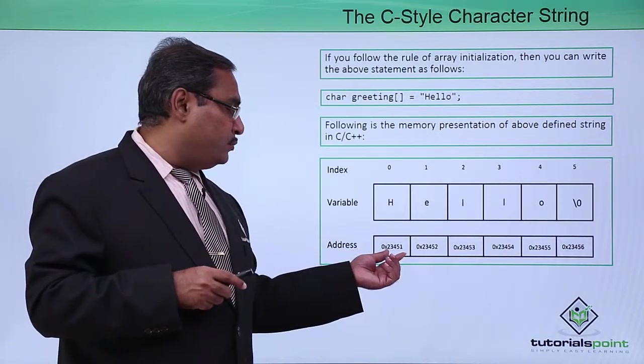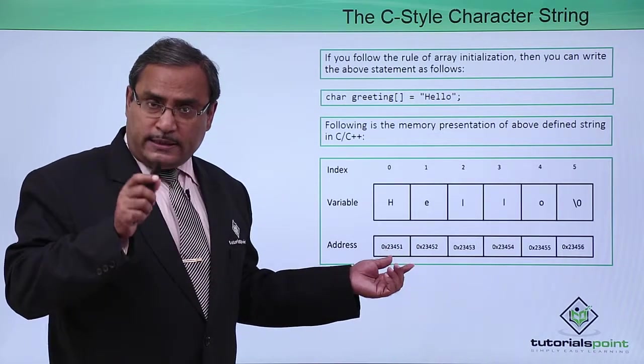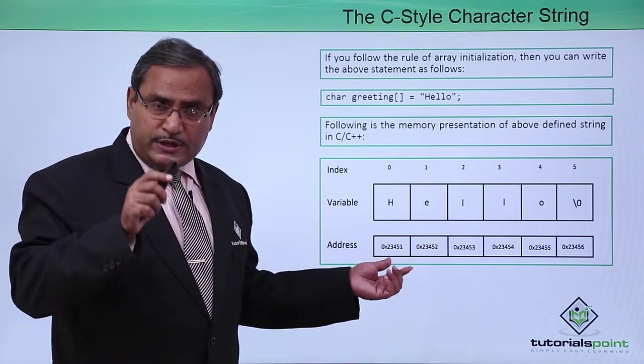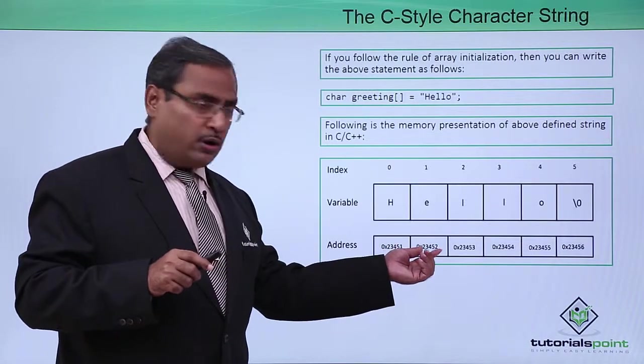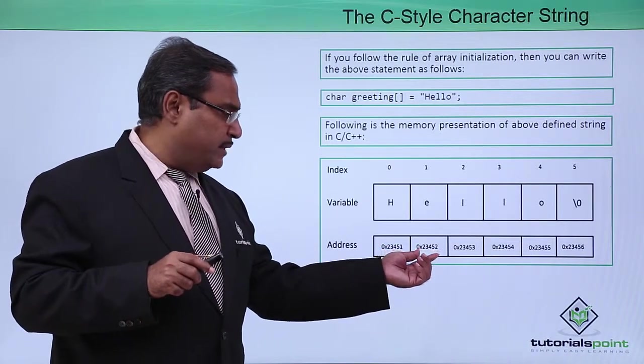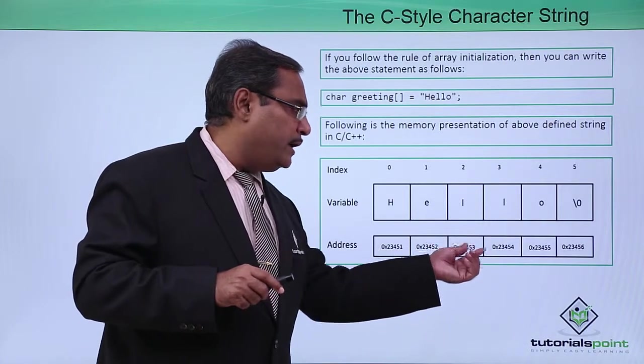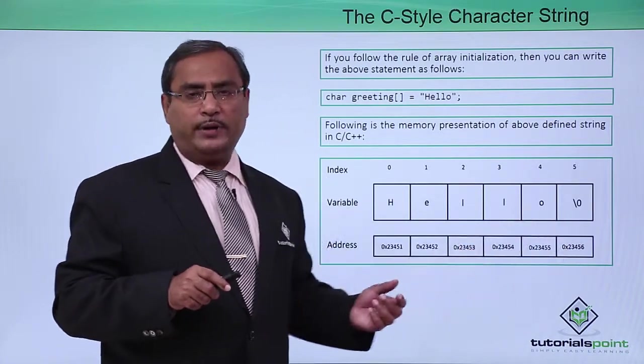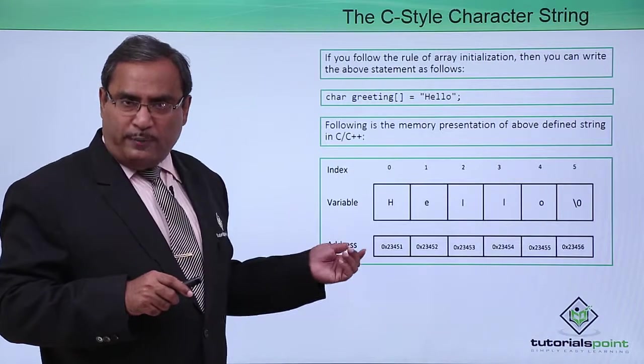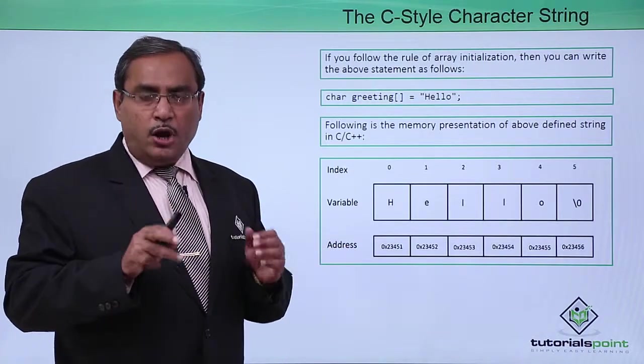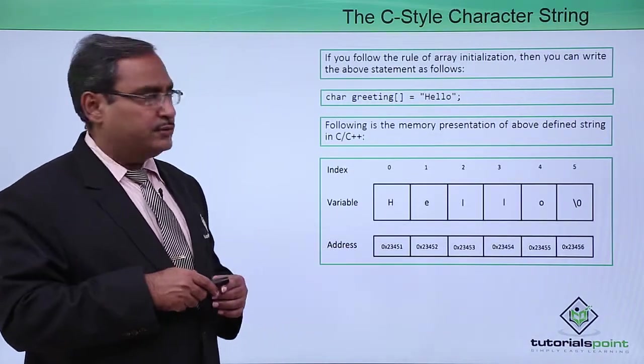Let it be starting from 2, 3, 4, 5, 1. We know that character occupies one byte in the computer's memory. So the next location's address will be incremented by one, one incremented, one incremented in this way. This address whatever we have written here is arbitrarily only to build up the conception of yours.